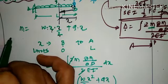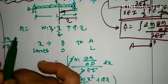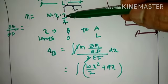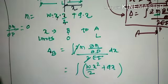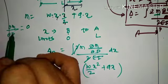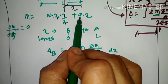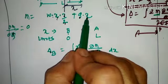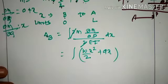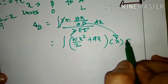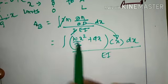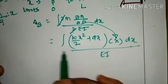Taking ∂M/∂Q: the first term Wx²/2 has no Q, so its partial derivative is 0. The second term Qx, differentiated with respect to Q, gives X. Therefore ∂M/∂Q = X. Substituting, delta B equals the integral of (Wx²/2 + Qx)·X dx divided by EI, with the 2s cancelled out.